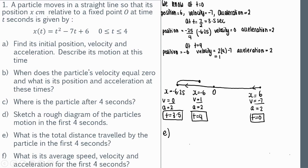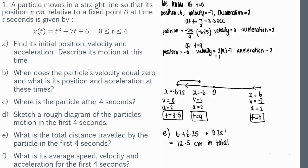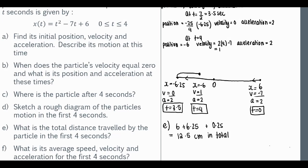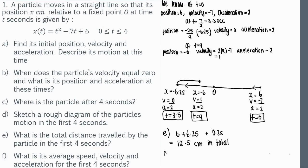Part e asks for total distance travelled in the first 4 seconds. We add each section: from x = 6 to x = 0 is 6 cm; from x = 0 to x = −6.25 is 6.25 cm; then the particle returns 0.25 cm back to x = −6. The total distance travelled is 12.5 centimeters.